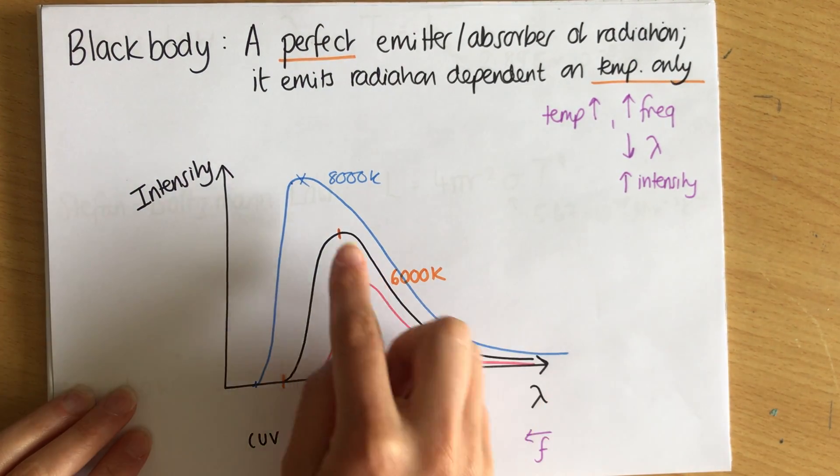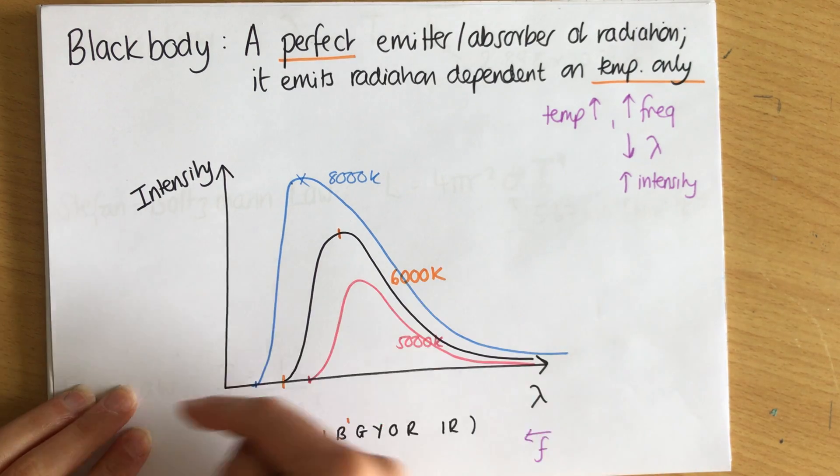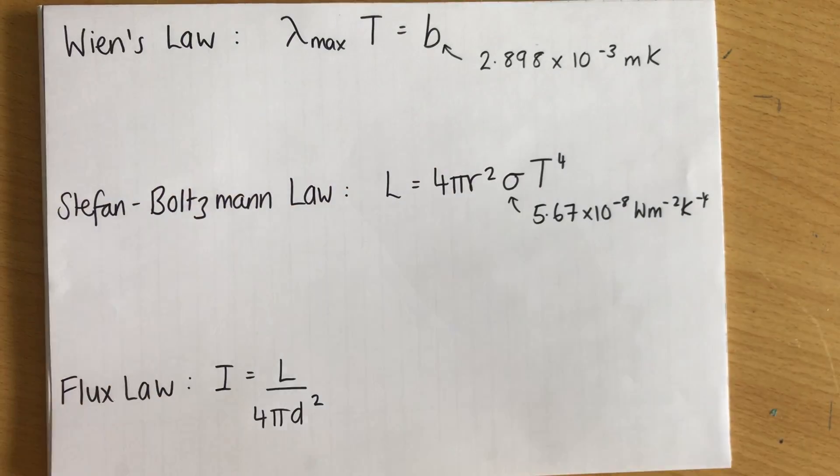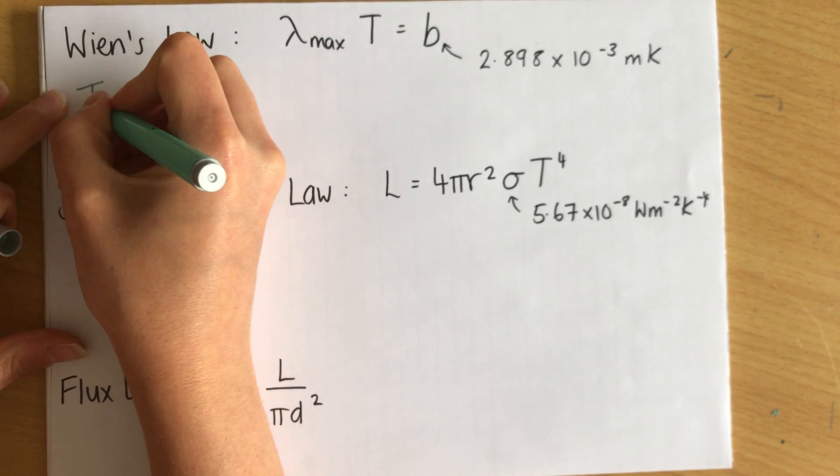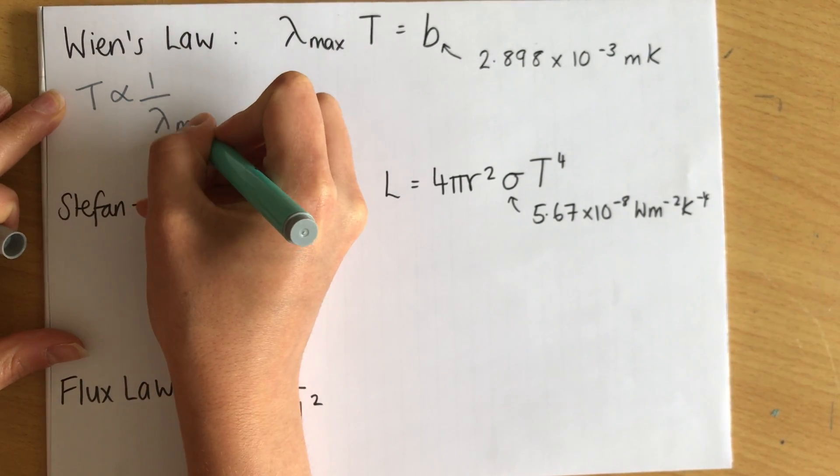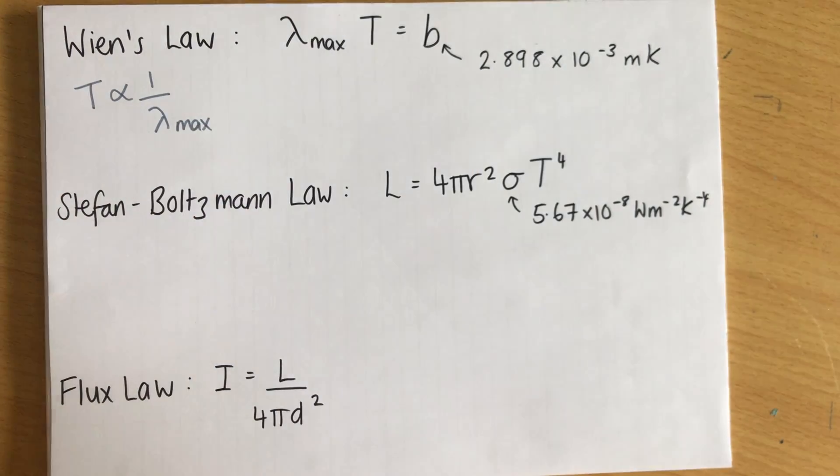Now we know that as we increase the temperature, we're making the peak go more this way. So we're increasing the frequency of the peak, but we're decreasing the wavelength of the peak. And Wien's law tells us that. Wien's law says that temperature is inversely proportional to the peak or the max. When it says max, it means the peak wavelength.